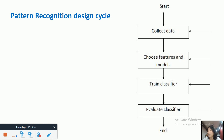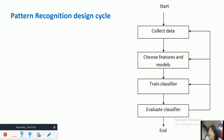When finding features in any object there are many features available. If we select all features, we overburden the classifier and it won't be effective. On the other hand, if we take too few features, we compromise the quality of the classifier and it won't give accurate results. So it is very important to choose the useful features according to the problem domain.